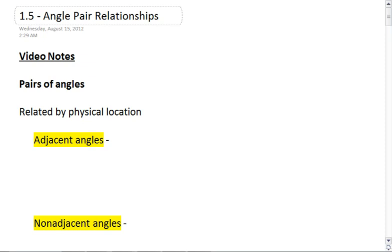Geometry Notes, Section 1.5, Angle-Pair Relationships. Now that we've looked at angles in general, we're going to look at pairs of angles, or special pairs of angles together.